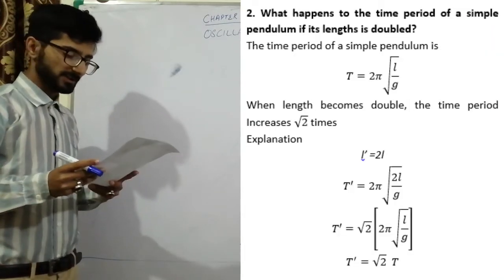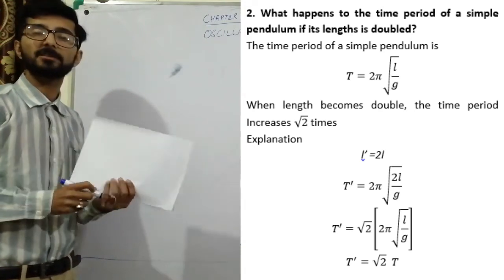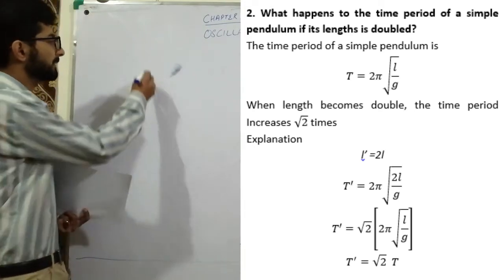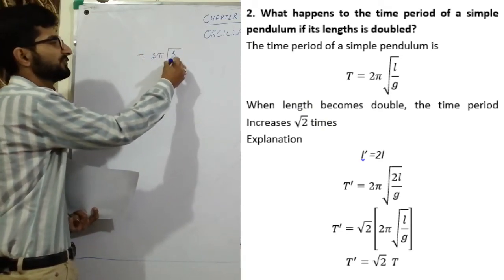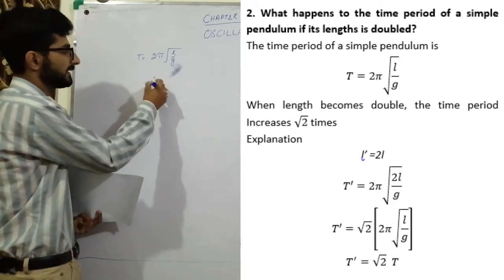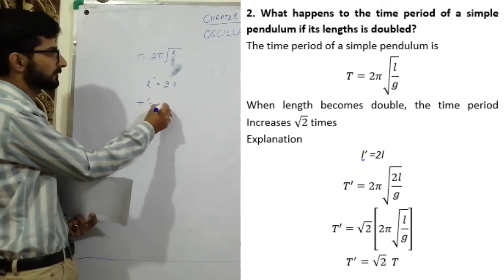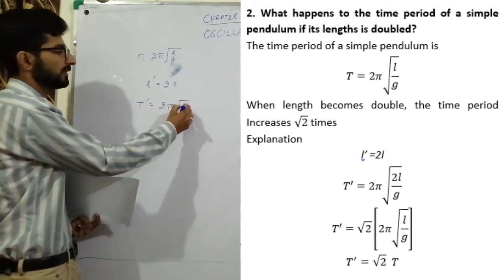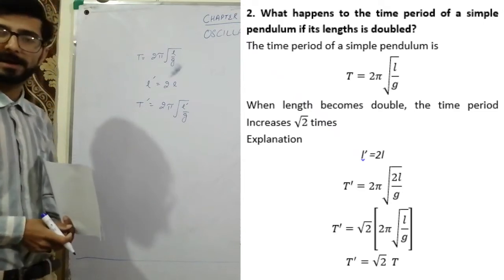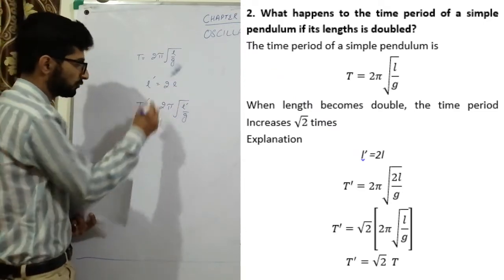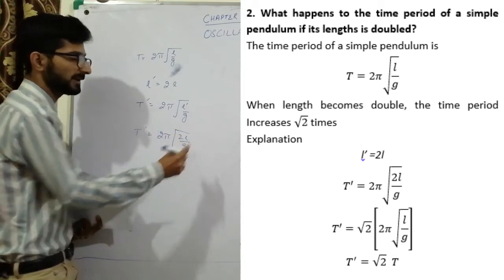Question number 2: What happens to the time period of simple pendulum if its length is doubled? Time period of simple pendulum is equal to T = 2π√(l/g). So if I replace l with 2l, it becomes T' = 2π√(2l/g).